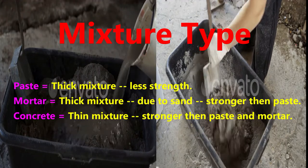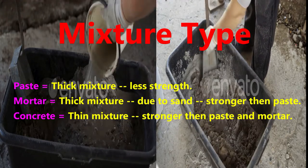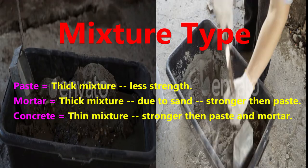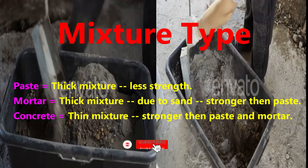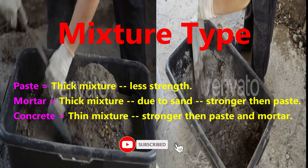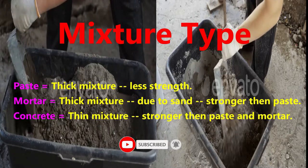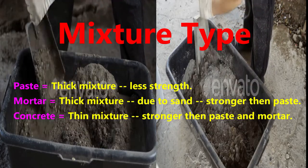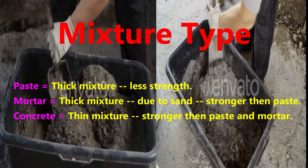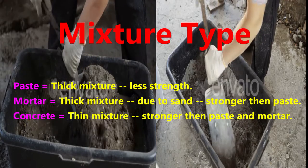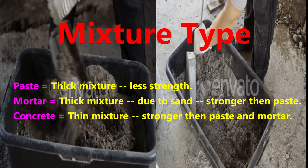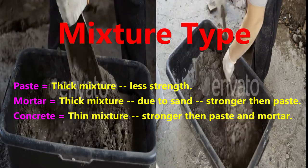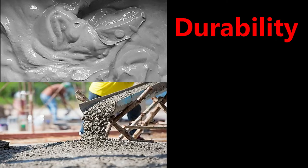Next, mixture type. Paste is a mixture of cement and water, so it is in the form of a thick mixture with less strength. Mortar is also a thick mixture but due to the presence of sand it is a little stronger than paste. Concrete is a thinner mixture, and because of the presence of sand and coarse aggregate, it is stronger.